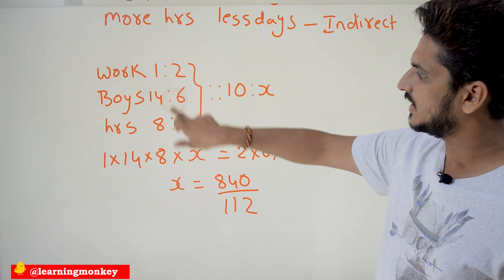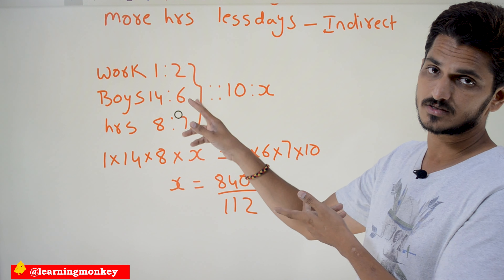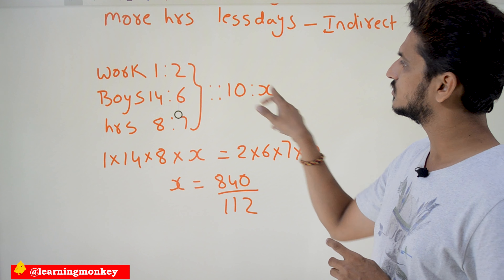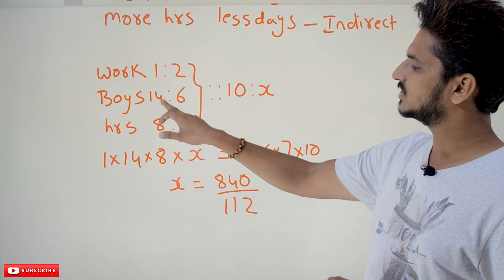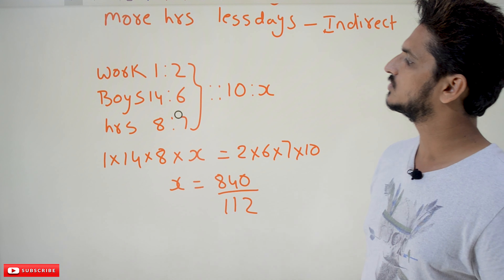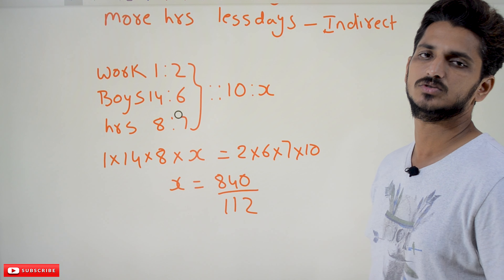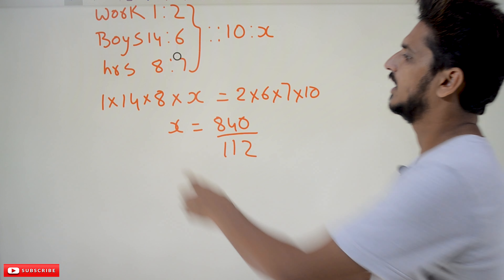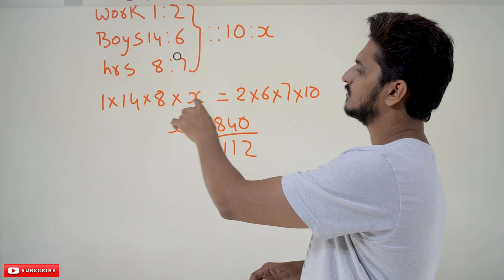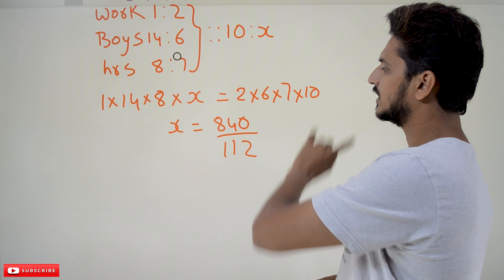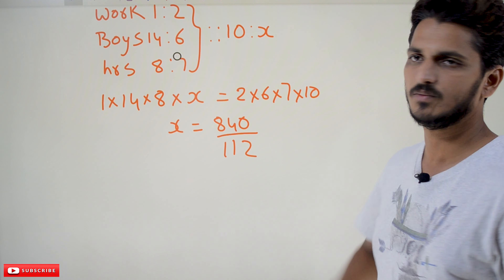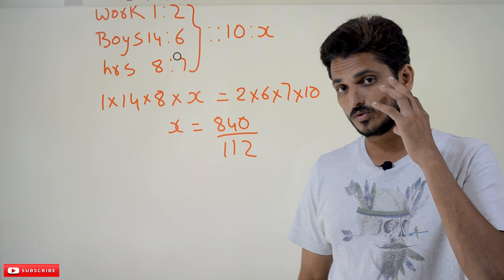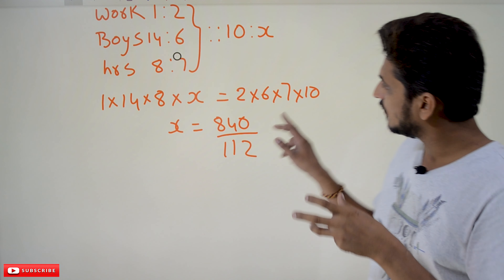Since boys and hours are indirectly proportional, their ratios are reversed. Work 1 is to 2. Boys: 6 is to 14, written as 14 is to 6. Hours: 7 is to 8, written as 8 is to 7. Product of extremes equals product of means: 1 × 14 × 8 × x = 2 × 6 × 7 × 10. Therefore x = 840 ÷ 112.